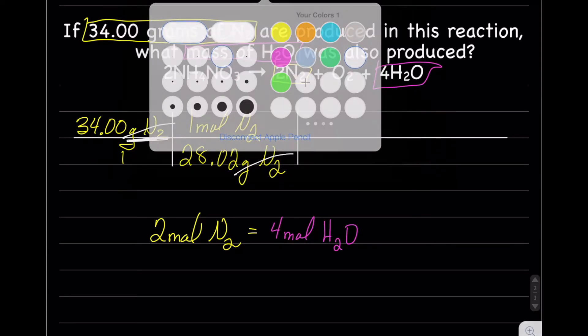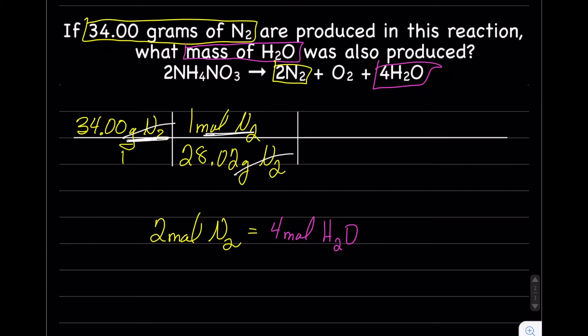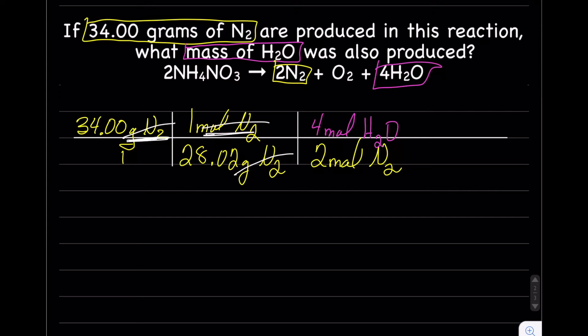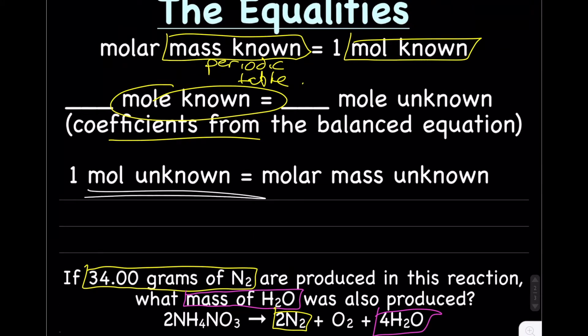And we need to figure out what goes on the bottom. We have mole N2 at the top, and we want to try to cross that out, which means we need our mole N2 at the bottom there, which means that H2O goes at the top. Let's cross out our units and molecules. So mole N2 crosses out mole N2. We're left at mole H2O, which is our unknown.